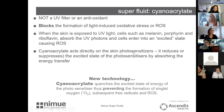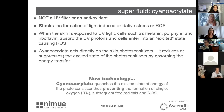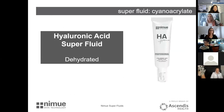CA quenches the excited state of energy in the photosensitizers, thus preventing the formation of singlet oxygen — O2 — which is a double free radical with two unstable molecules looking to balance out, causing a lot of damage in the skin.